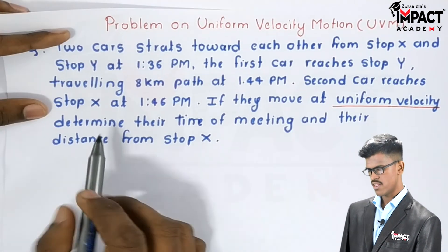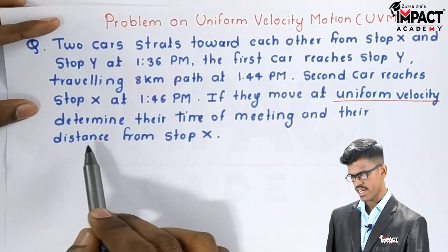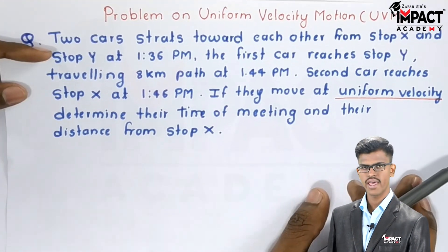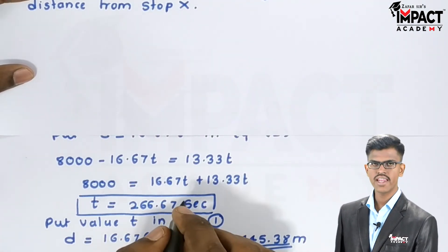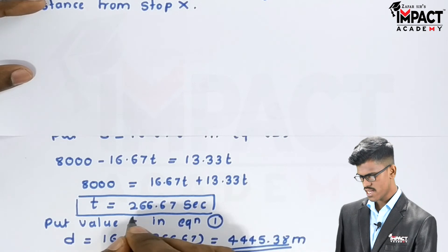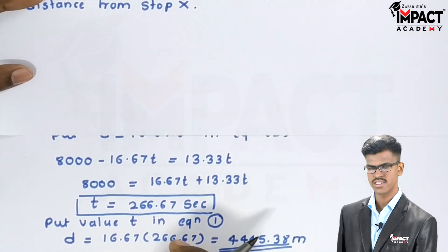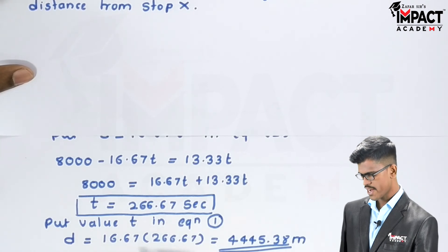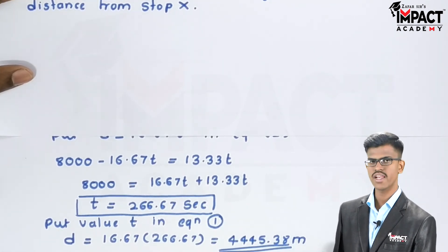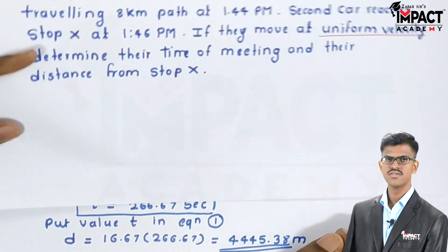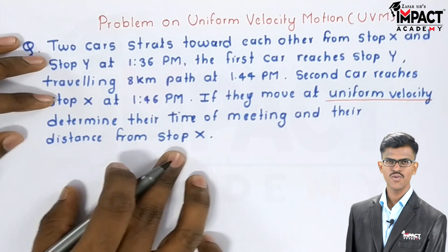The question asks to calculate the time of meeting and their distance from stop X. The time required for car A and car B to meet each other is 266.667 seconds, and the distance from stop X to meeting point C is 4445.38 meters. That is our final answer.